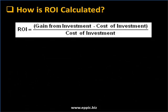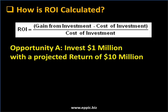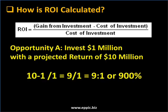How is ROI calculated? The formula is: ROI equals the gain from an investment minus the cost of that investment, divided by the cost of the investment. For example, in Opportunity A, you have an investment of $1 million with a projected return of $10 million. So the gain from the investment would be $10 million minus the cost of the investment — $1 million — equals 9, divided by the cost of the investment being 1, or 9 to 1, or 900%. Opportunity A offers us an ROI of 900%.